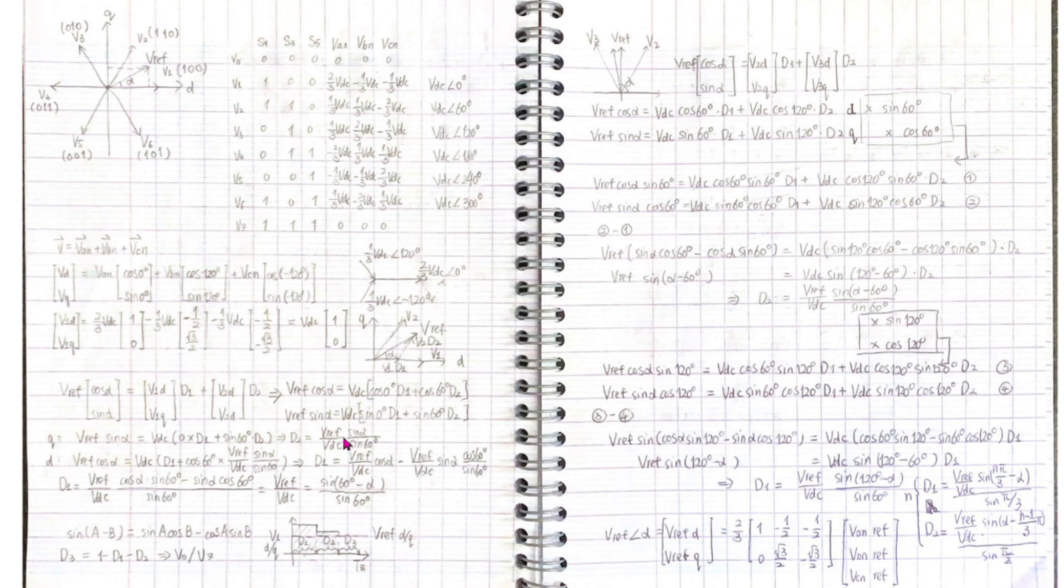For the second sector, we also put the reference on DQ axis to calculate D1 and D2. We just need to time a correct factor to eliminate D2. This calculation can be done for each sector.